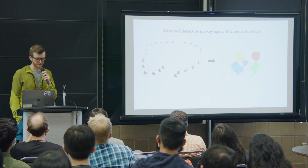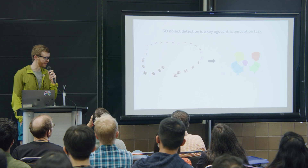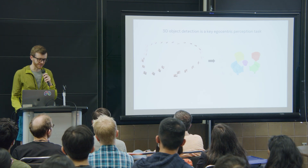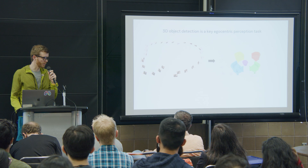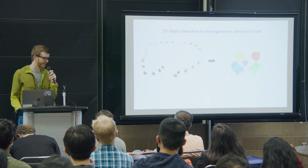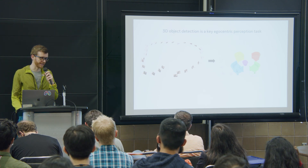Hello everybody. I will talk about egocentric multi-view 3D object detection. As Chris has introduced, this is one of the core egocentric perception tasks our team is working on. The problem is to take in multiple views of the same scene where we have poses and calibration for the images, and then produce an object-based reconstruction.